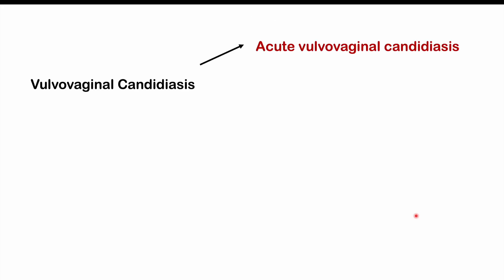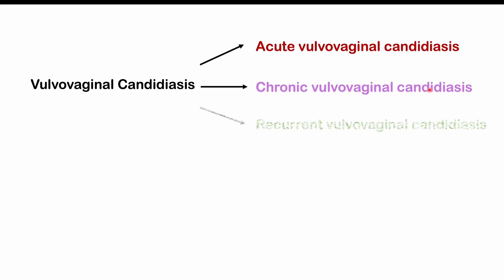There are different types of vulvovaginal candidiasis: acute vulvovaginal candidiasis, chronic vulvovaginal candidiasis, and recurrent vulvovaginal candidiasis. We'll talk about these in more detail when we discuss the signs and symptoms.